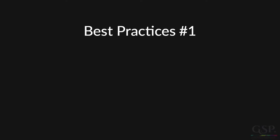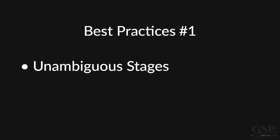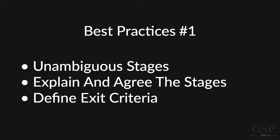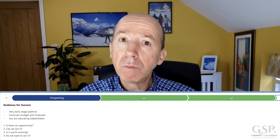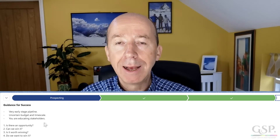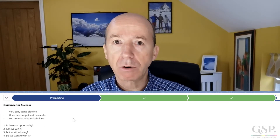I recommend making sure your stages are clear and unambiguous. Communicate the stages and agree them with the sales team. And establish exit criteria that determine when an opportunity is ready to move from one stage to the next. You might want to use the Lightning Path in Salesforce to summarise the definition of each stage and to list those exit criteria.